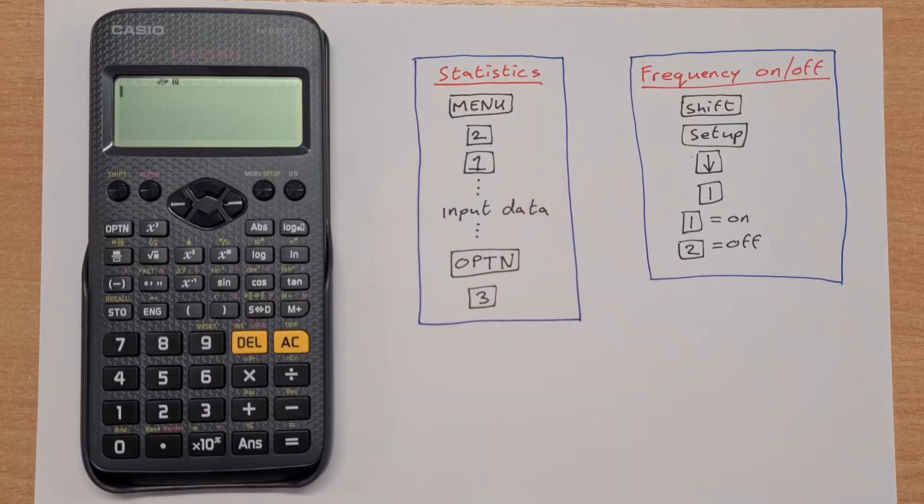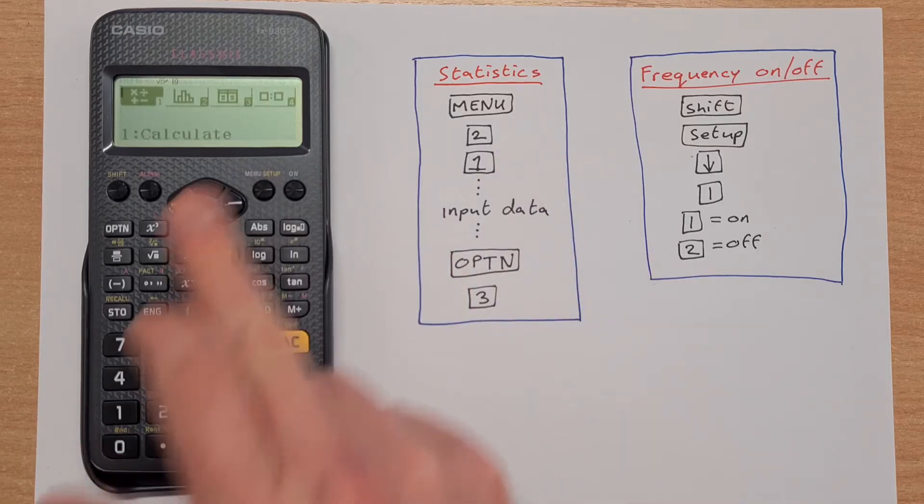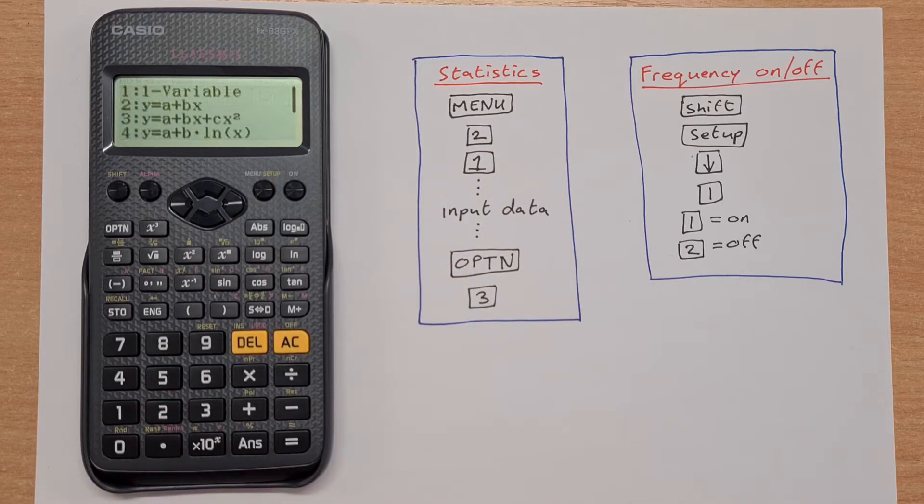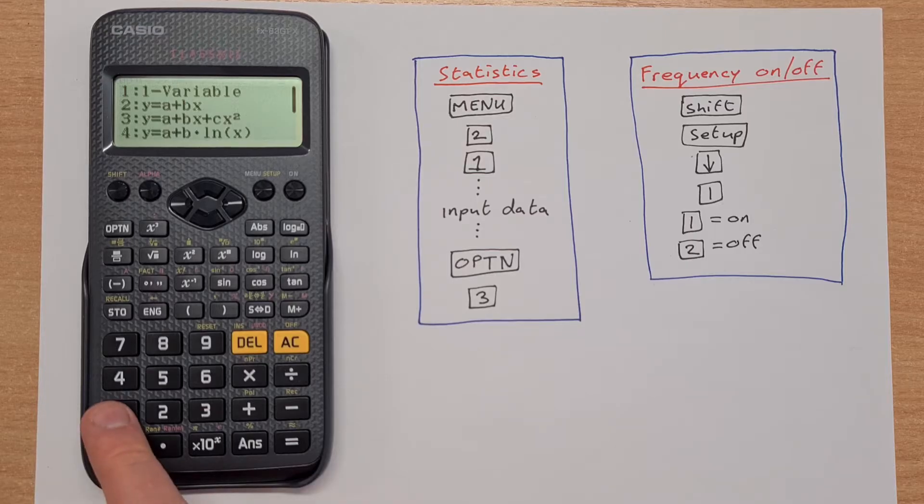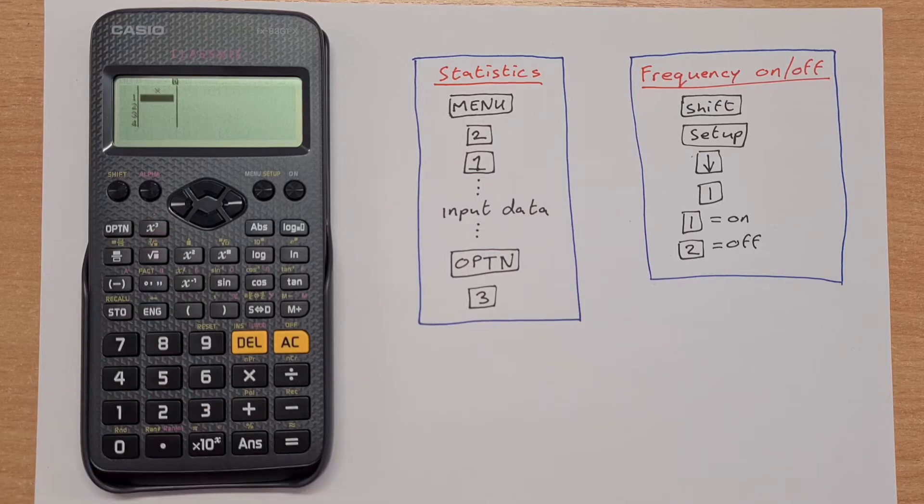To get into our statistics we press menu and then we press 2. That will bring us into this menu here and we press 1 for one minus variable. That brings us up this table here where we can input data.